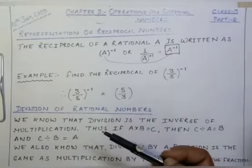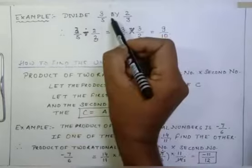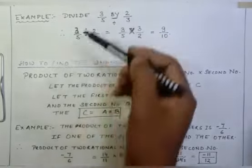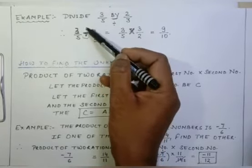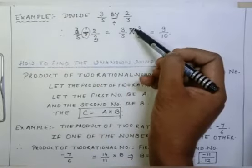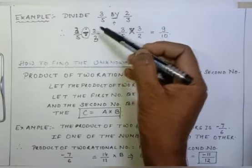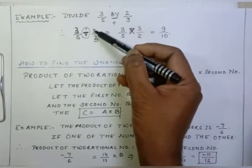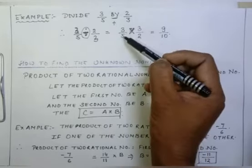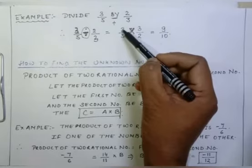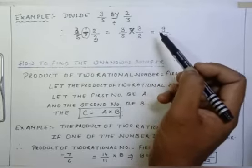Let us take an example so that it will be very clear to everyone. Divide 3 upon 5 by 2 upon 3. Here 'by' means to divide, so I have written 3 upon 5 divided by 2 upon 3. When I remove the division sign, the second fraction is reciprocated — the numerator takes the place of denominator and denominator takes the place of numerator — and we simply multiply numerator by numerator and denominator by denominator. So the answer will be 3 into 3 equals 9, and 5 into 2 equals 10, giving 9 upon 10.